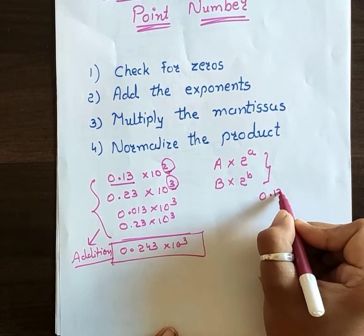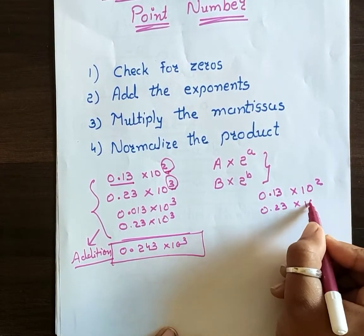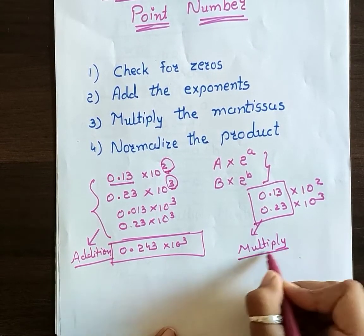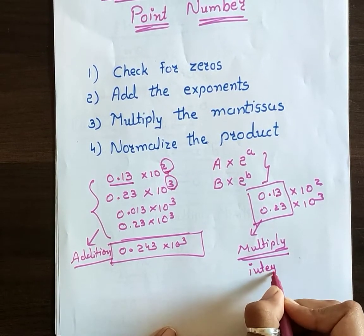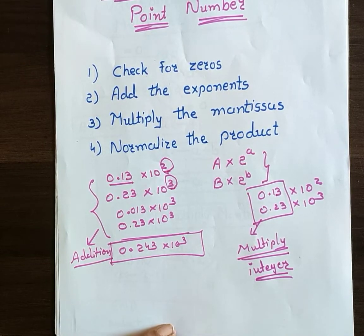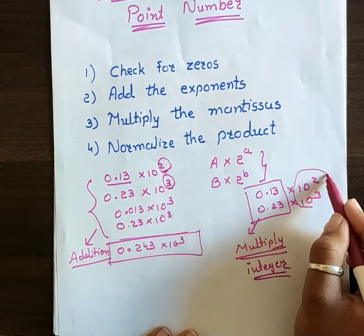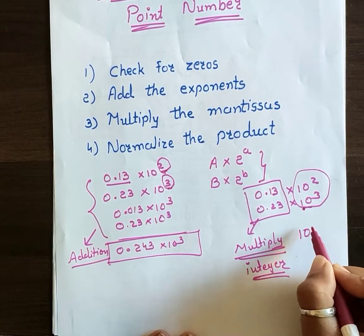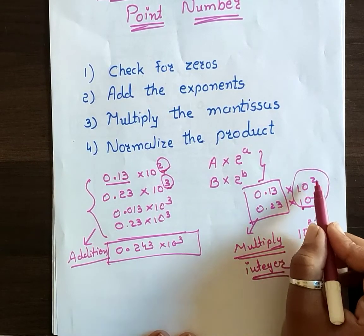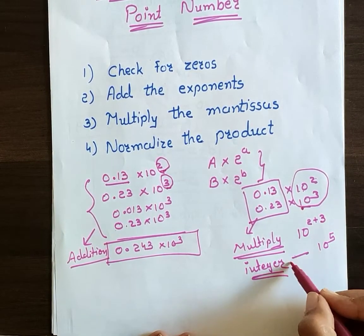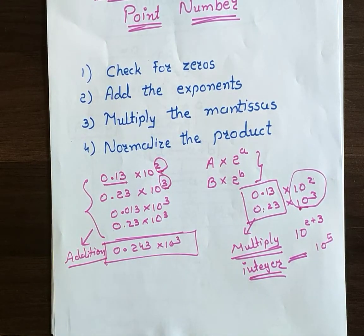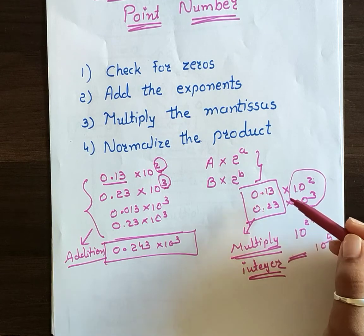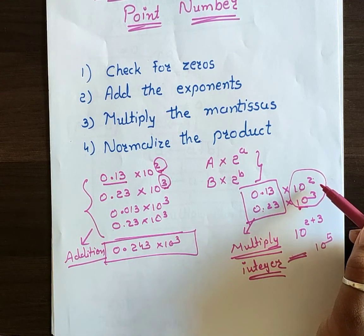Now if I want to multiply these two numbers — 0.13 into 10 squared and 0.23 into 10 cubed — I have to multiply both mantissas. That multiplication is done the same way as multiplying integer numbers; I can use Booth's multiplication algorithm or any other algorithm. For the exponent part, when multiplying, the exponents are added: 10 raised to 2 plus 3, that is 10 raised to 5.